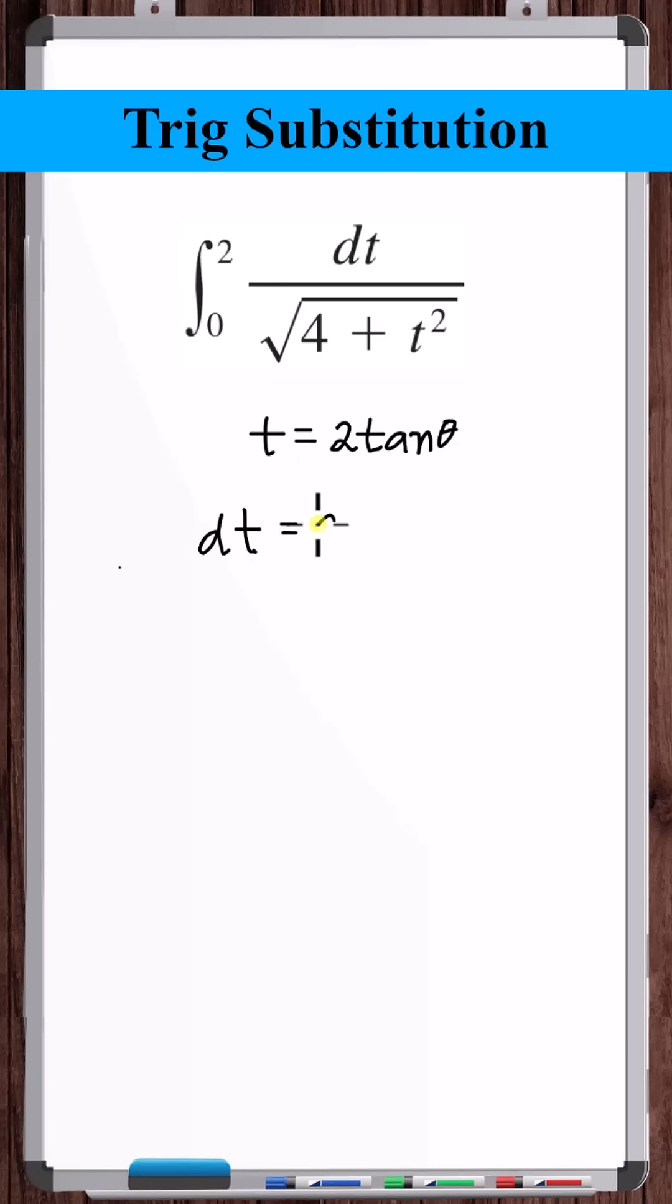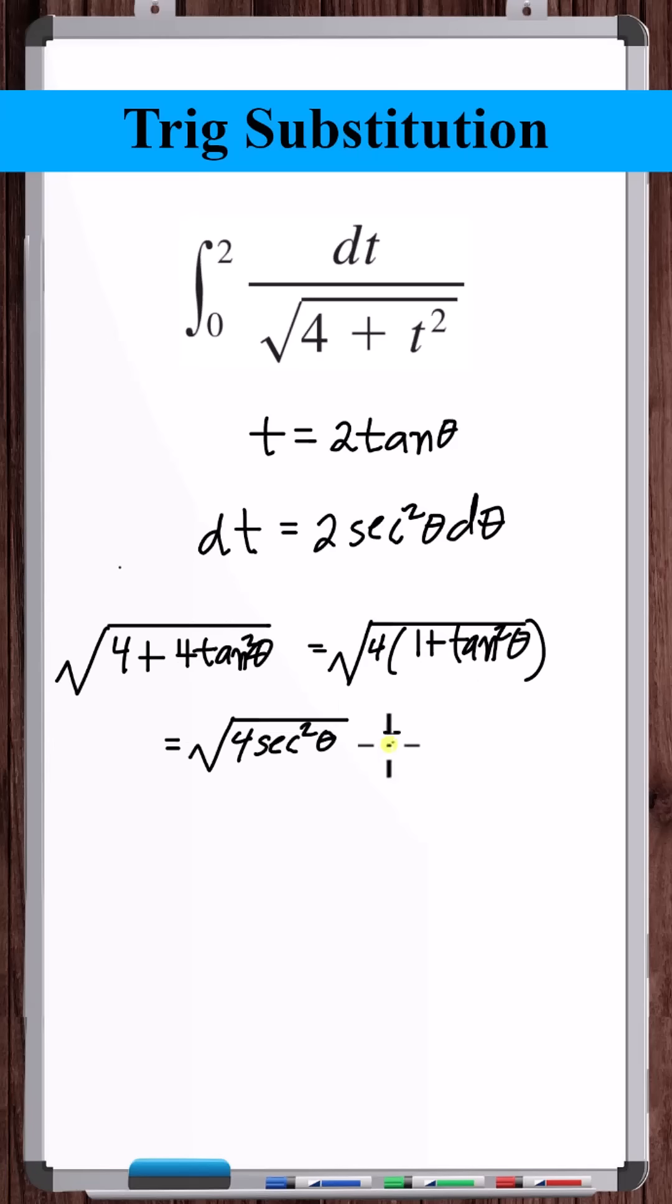Therefore, dt is equal to 2 secant squared theta d theta. The square root of 4 plus t squared is the square root of 4 plus 4 tangent squared theta. Factor out the 4, and 1 plus tangent squared theta is secant squared theta.